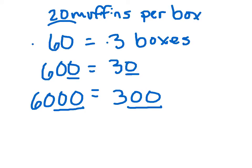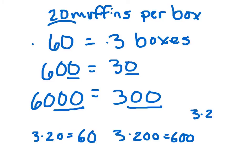So if you have 3 times 20, that's going to get you 60. 3 times 200, that's going to get you 600. And then 3 times 2,000, that's going to get you 6,000.